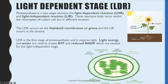The light dependent reactions are the first stage of photosynthesis and they're called this because they require light energy. That light energy, and also water — one of the reactants in photosynthesis — are used to ultimately create ATP and reduced NADP. These two molecules are needed for the light independent stage.